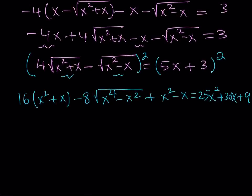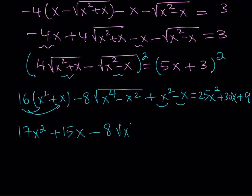Now, let's go ahead and distribute. From here, I'm getting 16x squared plus 16x. That gives me 17x squared. Then I get 16x minus x, that is 15x. And then minus 8 times the quantity x to the 4th minus x squared. And the whole thing is equal to 25x squared plus 30x plus 9.